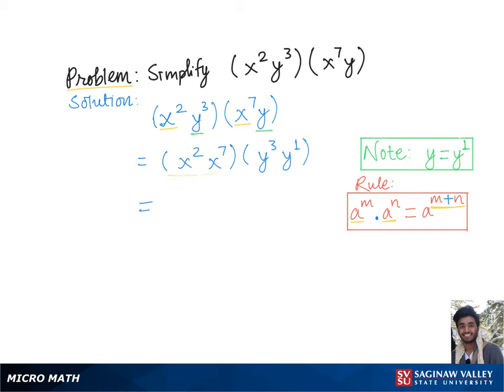So here in our problem, for this group we'll keep the common base x and add the exponents together, which is two plus seven. Similarly, for this group we'll keep the common base y and add the exponents together, which is three plus one, which gives us the final simplified form x to the ninth times y to the fourth.